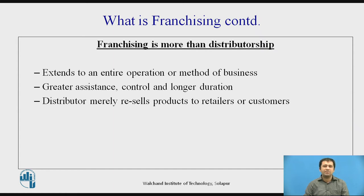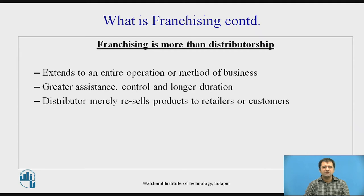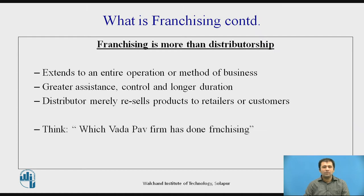The biggest example of franchising in the world is McDonald's. They extend support to the entire operation or method of the business, and generally the person who enters into a franchisee deal has a longer duration relationship. Whereas in distributorship, the company has a channel — they sell a physical product through a distributor, which only resells the products at their profit, which is further resold to retailers and then to customers.